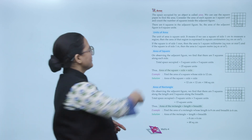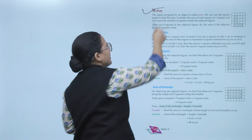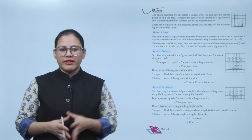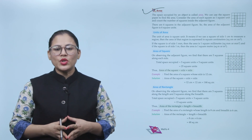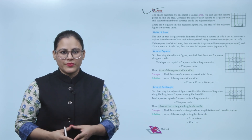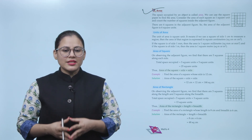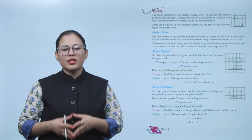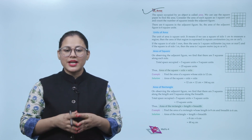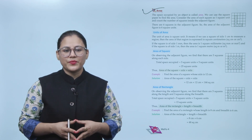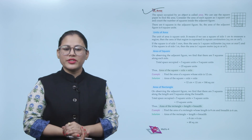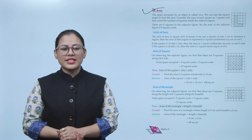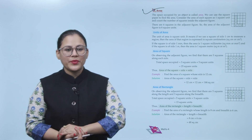Area: the space occupied by an object is called area. We can use square paper to find the area. Consider the area of each small square as one square unit and count the number of squares inside the figure. There are six squares in the adjacent figure, so the area of the figure is 6 square units.